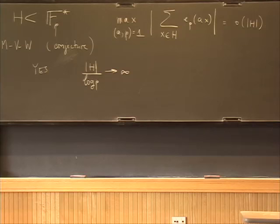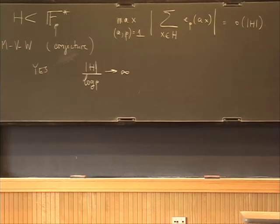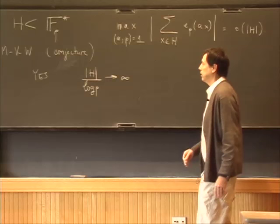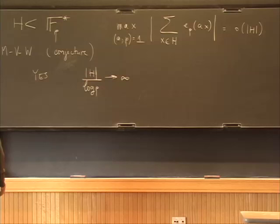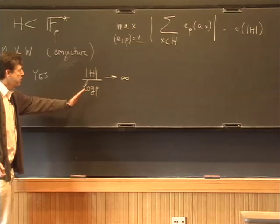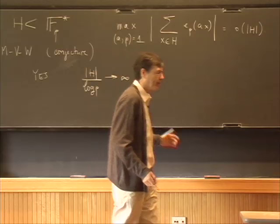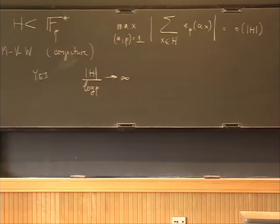What they conjecture is that as soon as you have the weakest imaginable condition — namely that the size of H divided by the logarithm of P goes to infinity — then you should have equidistribution. There are certain potential obstructions to this conjecture. Cognagin told me one last year, with a big question mark, because counter-examples depend on certain values of cyclotomic polynomials being prime or not.